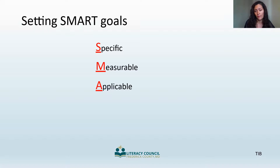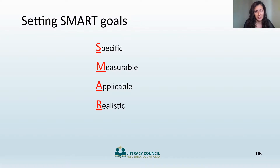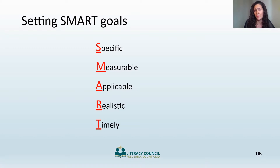Goals should be applicable. How will mastering the goal relate to the student's life? Will learning to read the menu help the student in their job or help them order the food they want to eat? Realistic goals should not be too easy, implying that the student is incapable, but not beyond the student's ability to achieve with some effort. Finally, goals should be timely. Agreeing on a time frame for achieving a goal helps the student stay motivated and focused. If the goal is not being reached, it indicates there is a disconnect somewhere, so look for underlying issues.